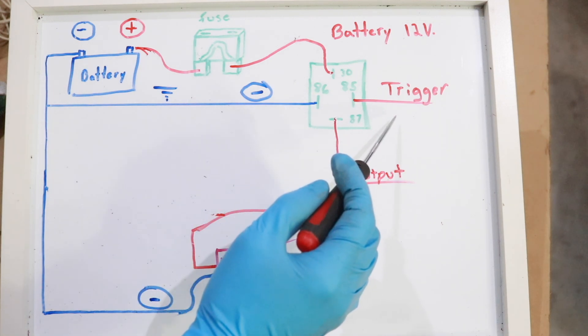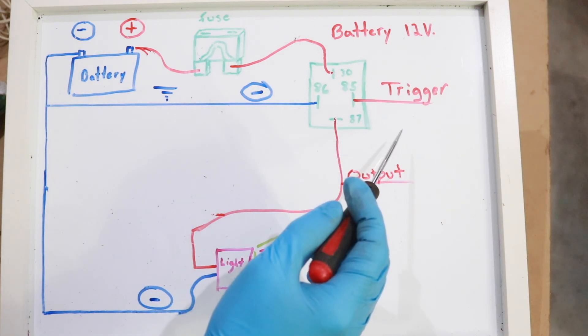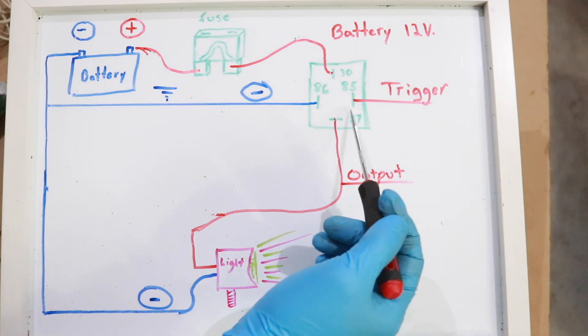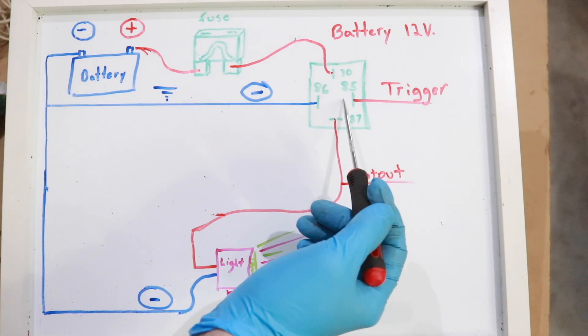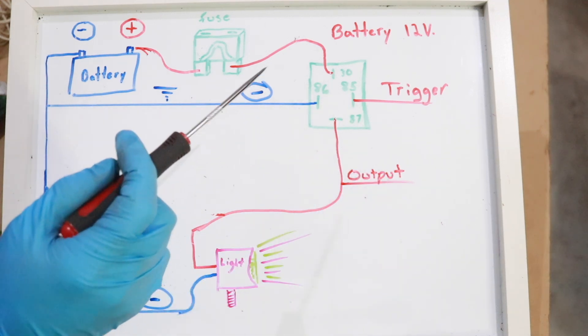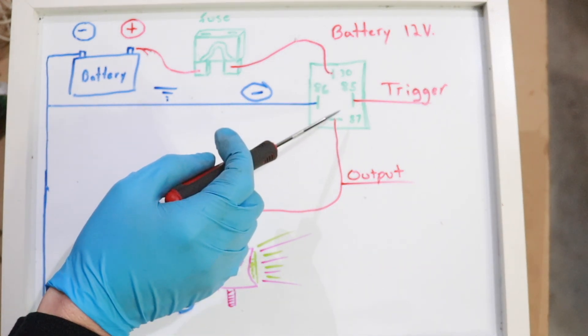85 is your 12-volt trigger line. You would have a 12-volt supply line coming into 85. When you supply 12 volts to terminal 85, it turns the switch on, so it connects points 30 to 87.